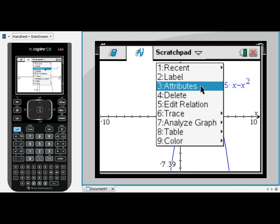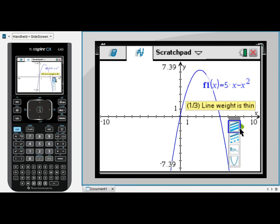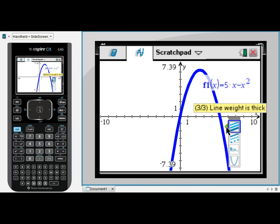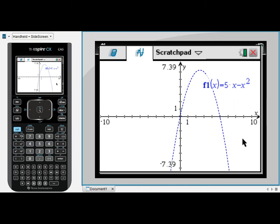You can change the attributes, which will allow you to change the weight of the line. It's currently thin. We can make it medium or thick. You can also change the form of the line, so it can be a dotted line or a dashed line.